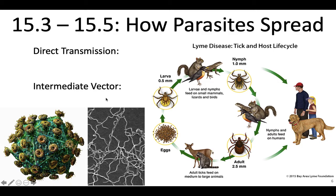Some parasites spread through an intermediate vector. Borrelia burgdorferi — the spirochete parasite that causes Lyme disease — relies on ticks as an intermediate vector. Its main hosts are squirrels, lizards, birds, people, and dogs, but it's carried by ticks. Anything that's an arthropod-borne disease generally has that arthropod as an intermediate vector, not the definitive host. Malaria is another example of something with an intermediate vector.